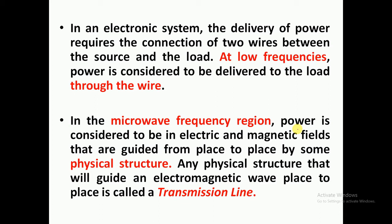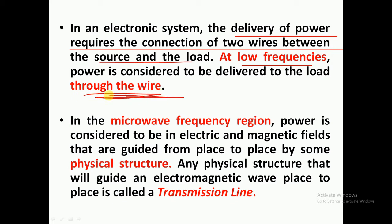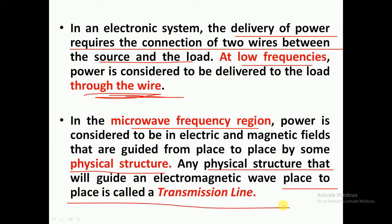In electronic systems, for transferring power we need some wires for lower frequencies. For lower frequencies, power transfer takes place using wires. Whereas for electromagnetic — that is, microwave frequencies — a physical structure is required. That physical structure transfers power and enables power distribution from place to place over a distance. That is called a transmission line.